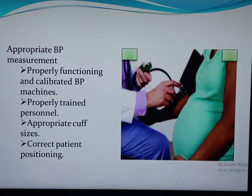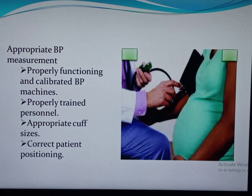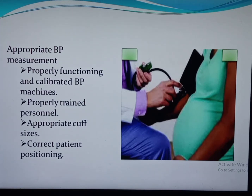Appropriate blood pressure measurement is essential for diagnosis. Key considerations include: a properly functioning and calibrated BP apparatus, properly trained personnel, and appropriate cuff size selected for the patient's body habitus. The BP cuff bladder length should be 80 percent of the upper arm circumference, and the width should be at least 40 to 46 percent of the upper arm circumference.